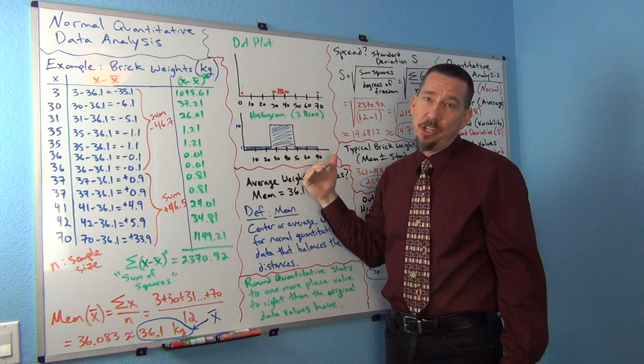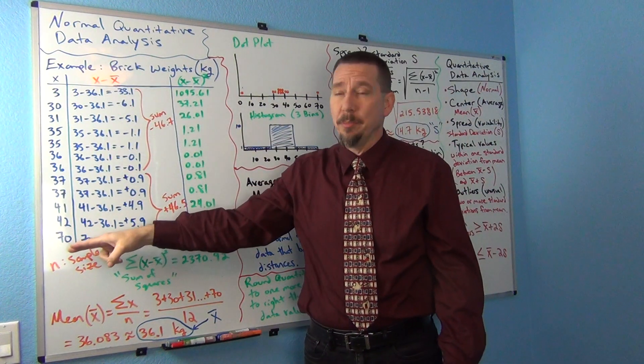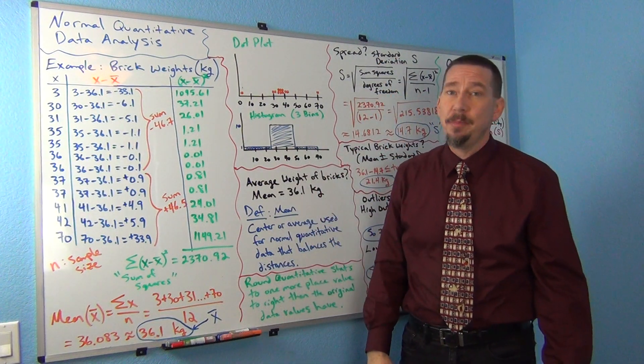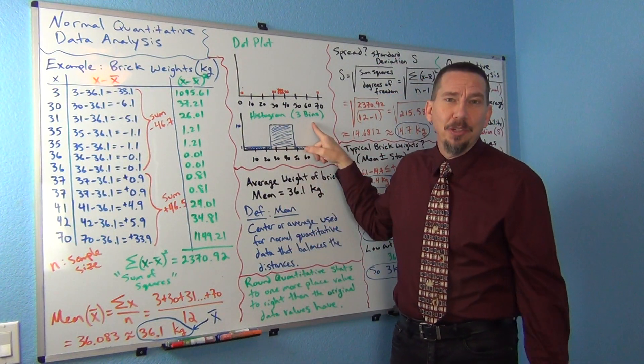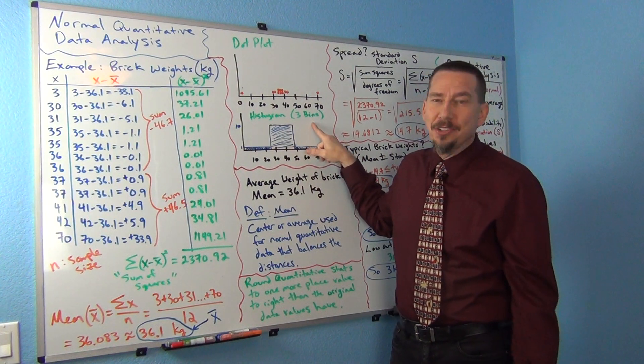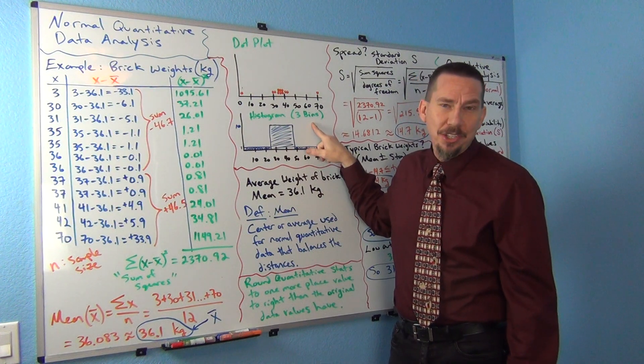The smaller the data set, the less bars you want. This data set only had 12 numbers. I don't want 12 bars because that's not really going to help me see the shape. I want less bars. So usually my golden rule is if you've got a small data set, I usually use three bars or three bins. That works pretty well for trying to figure out what the shape might be.